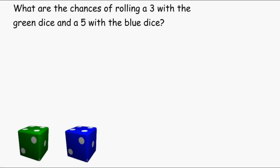This is Mr. Masonette and today we are going to work on a probability problem involving two events. This problem is asking us what are the chances of rolling a 3 with the green dice and a 5 with the blue dice.